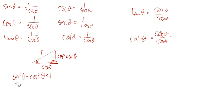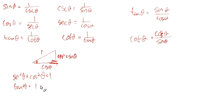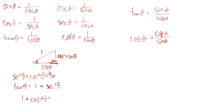If you divide both sides by cosine squared, sine squared over cosine squared gives you tangent squared, cosine squared over cosine squared is 1, and 1 over cosine squared is secant squared. Doing the same thing and dividing everything by sine squared: sine squared over sine squared is 1, cosine squared over sine squared is cotangent squared, and 1 over sine squared gives you cosecant squared.